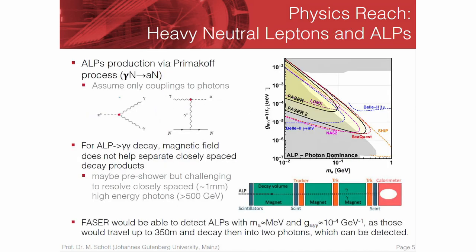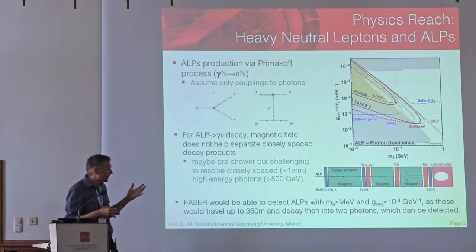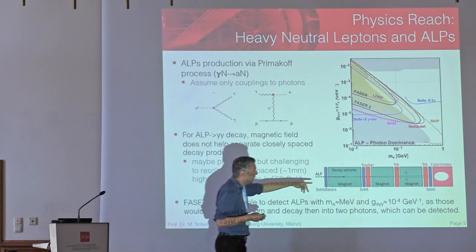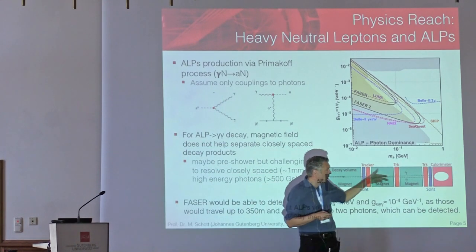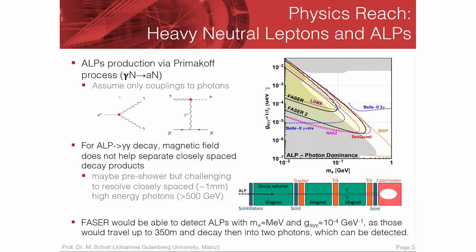Let's go to the part which is for me much more interesting, which is axion-like particles. There we would look for ALPs decaying into two photons. The problem here is that these two photons when they decay will not be separated in the magnetic volume, so we have to have a certain opening angle which we then reconstruct as a calorimeter signal. In principle, when we see nothing, nothing, nothing in the center and then here a deposit, that would already be a clear sign of something new. But to be very sure that this is an axion, you might want to be able to separate these two photons.